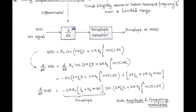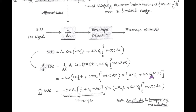Now, after passing through the differentiator, we get d/dT of S(T), which is simply the differentiation of FM wave. So d/dT of S(T) = −sin(2π·FC·T + 2π·KF·∫m(τ)dτ) × (2π·FC + 2π·KF·m(T)). Here the first expression is called the envelope, which represents amplitude modulation, and the second represents frequency modulation.